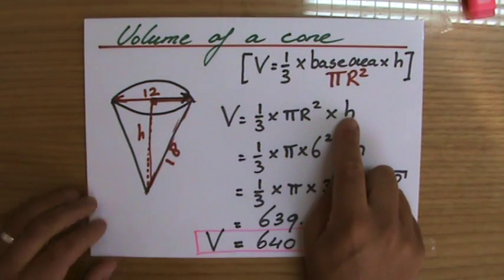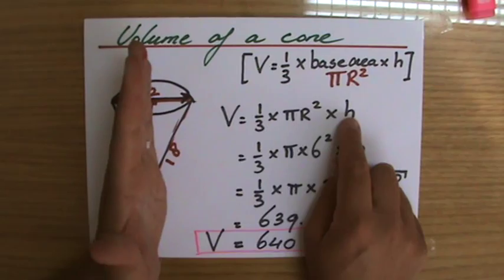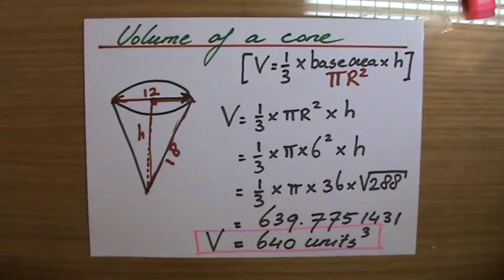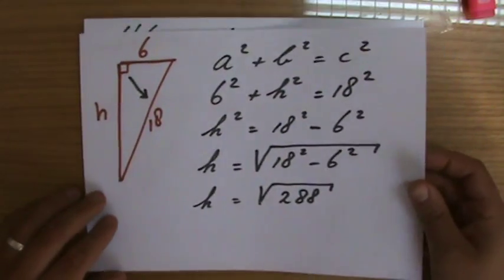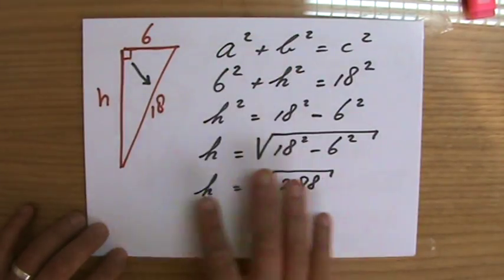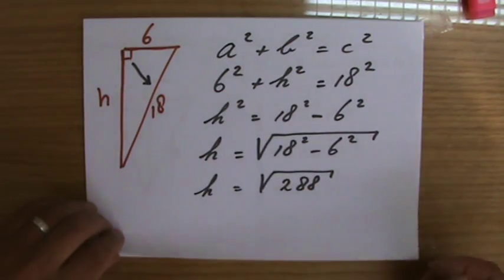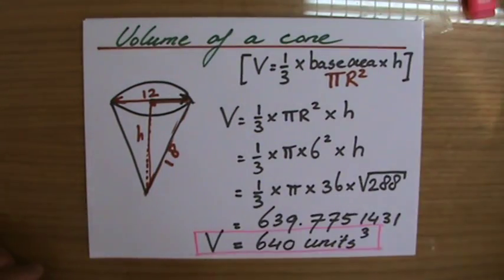I still got to realize that height is not the 18 - the height is this. I have to calculate the height, and that is not a problem because we are young adults and we can use Pythagoras theorem to calculate the height.